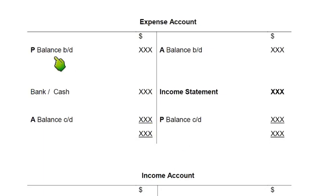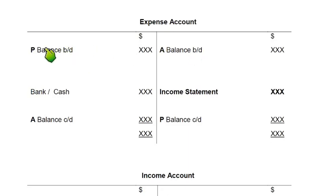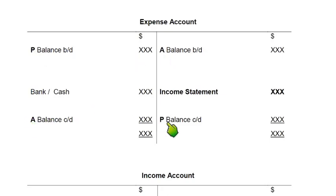There is a balance BD on the debit side and a balance BD on the credit side. We can remember this with the help of a mnemonic — PAAP. This is P, A, A, P, and we make it in a Z shape.